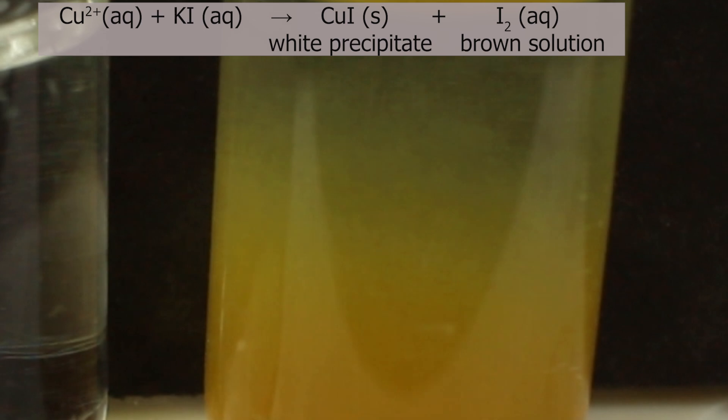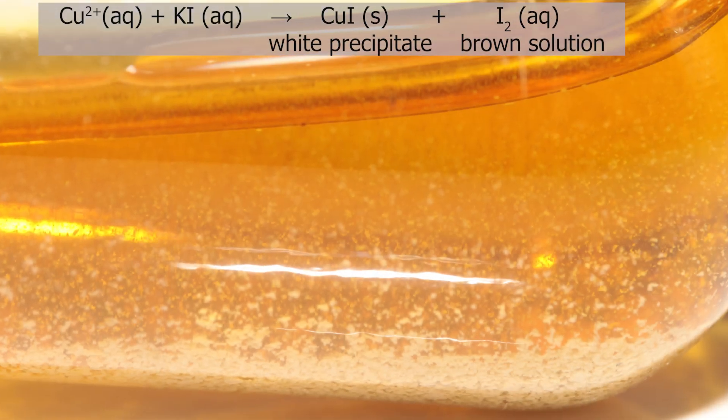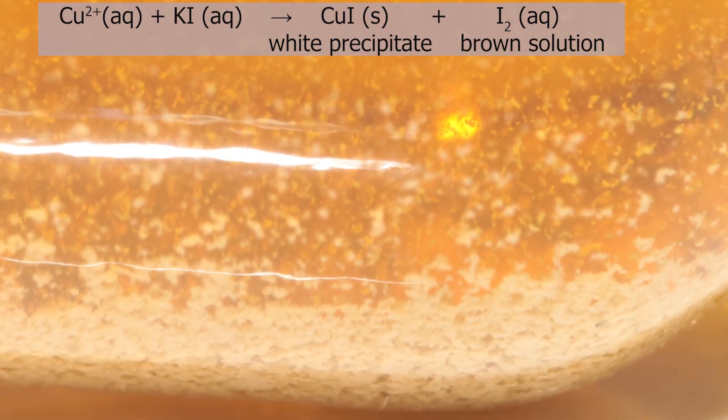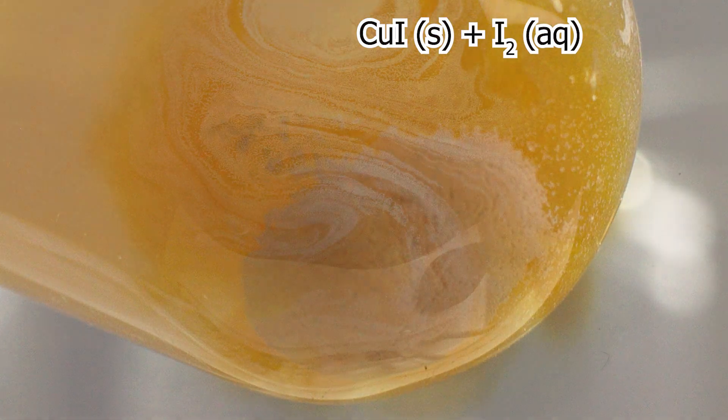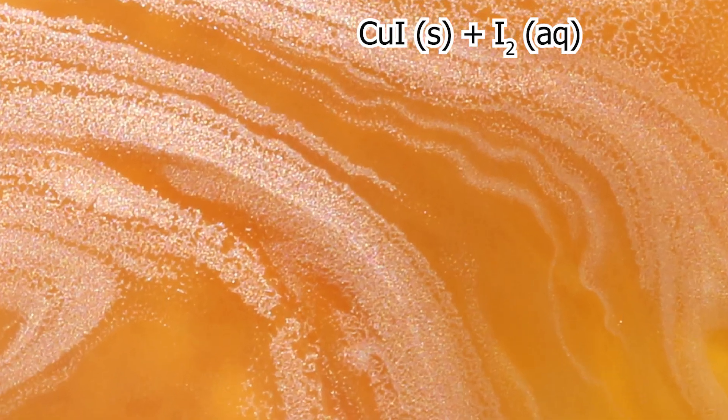White precipitate is copper I iodide which is insoluble. You have to wait a little for this precipitate to settle, then you see it clearly. Precipitate is necessary because iron III for example also oxidizes potassium iodide to iodine, but it doesn't form white precipitate.